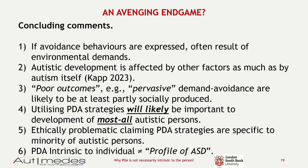Wrapping up and concluding: if someone is expressing avoidance behaviours, they are often a result of environmental demands placed upon them. There's no smoke without fire, as it were. Autistic development is affected by other factors as much as by autism itself, so poor outcomes — such as, for example, pervasive demand avoidance — are likely to be at least partly socially produced.